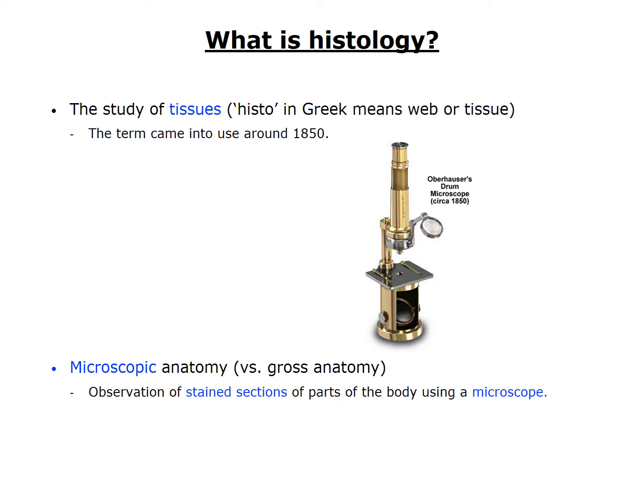In practice, histology is the observation of stained sections of parts of the body using the microscope. Thin sections of body parts are required in order to be able to shine light or electrons through them so that you can see something. And stains are required because most biological material is colorless, so you need stains to create contrast between different components. This is how the term is used by many clinicians: what did the histology show?